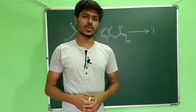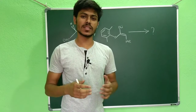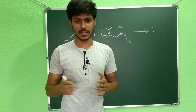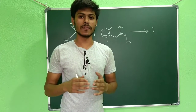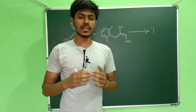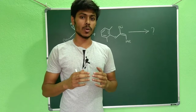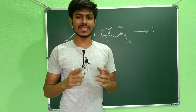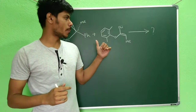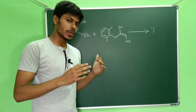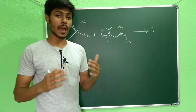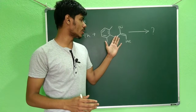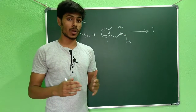The Felkin-Anh model is a very important tool to predict the stereochemistry of addition reactions to a carbonyl compound when the carbonyl group is attached to a chiral center. In the normal Felkin-Anh model, there is only one prochiral center, which is the carbonyl group itself. But whenever you have a prochiral center in your nucleophile as well, the problem becomes more complicated. Here, the carbonyl compound has a chiral center, and the nucleophile also contains a prochiral center.